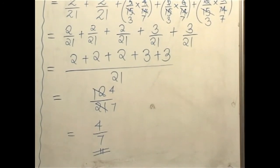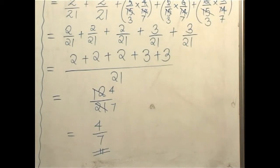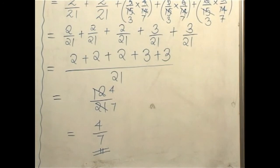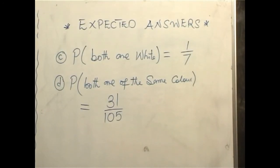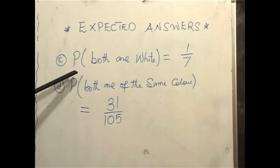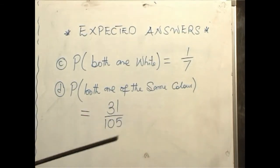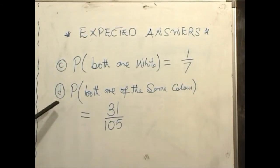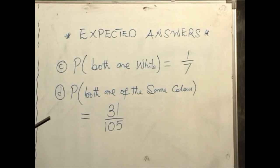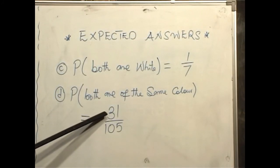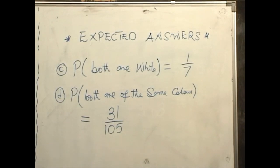Having looked at this construction of a tree diagram and having solved some of the problems given in the example, I will now move on and give you some exercises for you to work through so that you can gain the confidence that you need. For part C, where you are required to find the probability that both are white, the answer you should be able to find is 1 over 7. And part D, where both are supposed to be of the same color, the answer must be 31 over 105.